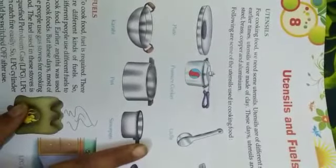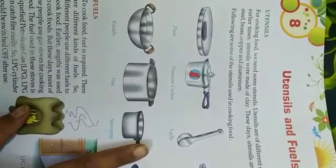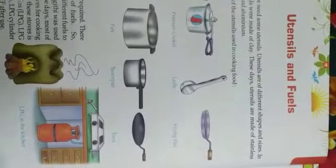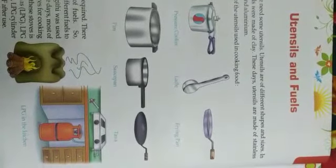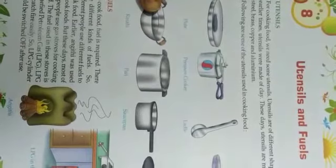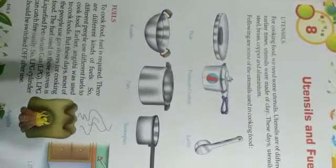Utensils — to cook food, we need some utensils. Khana cook kerne ke liye humko kuch utensils ki zaroorat hoti hai. Utensils are of different shapes and sizes. In earlier times, utensils were made of clay — pehle ke time mein bartan clay ke bane huay hote the.